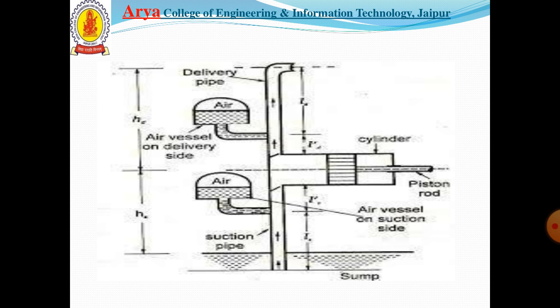When the piston forces the liquid into the delivery pipe with a velocity greater than the mean velocity vd, the additional liquid moves into the air vessel. When the velocity is less than vd, the additional liquid flows out of the air vessel and makes up the deficiency.